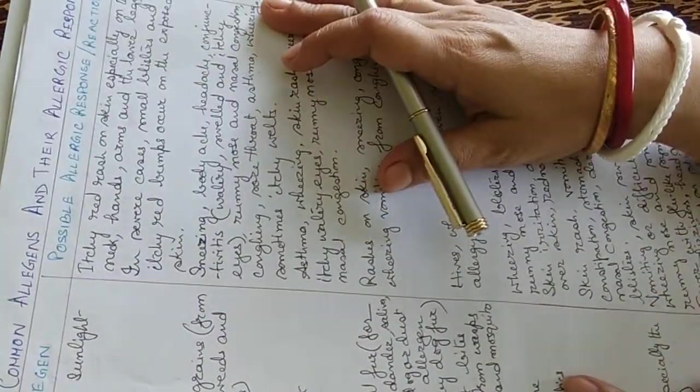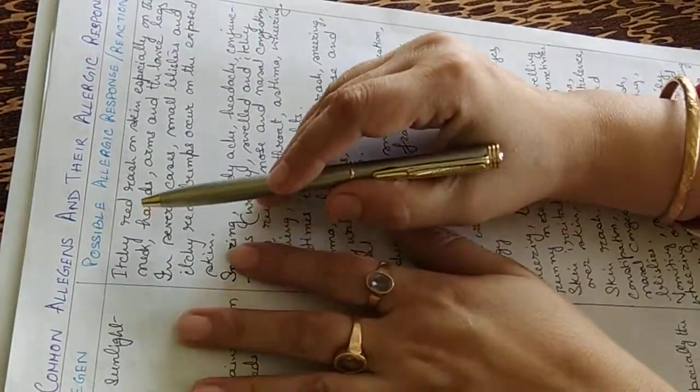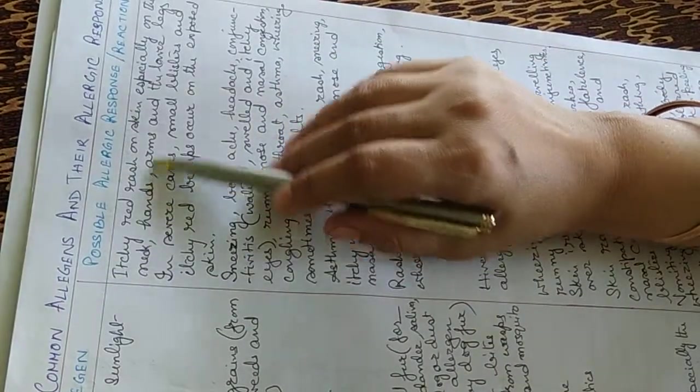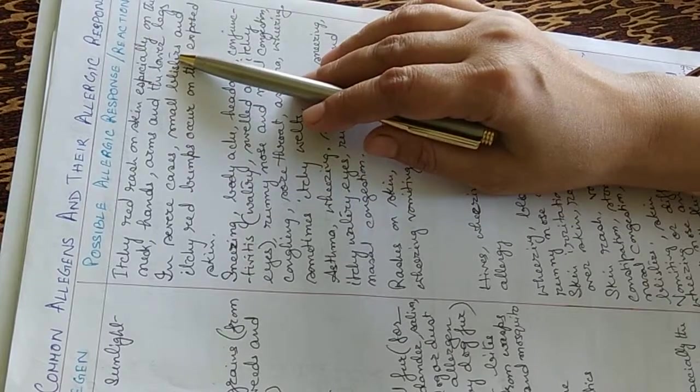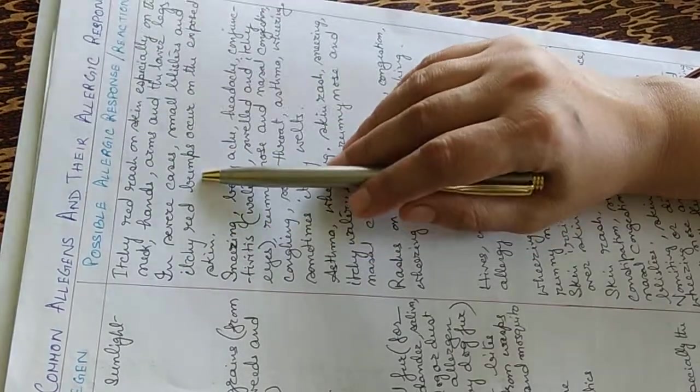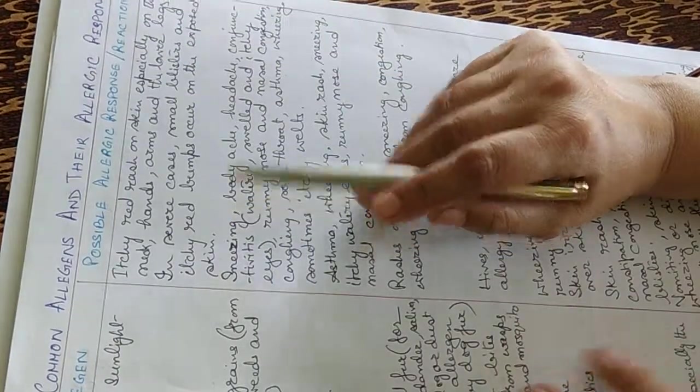Strong sunlight causes itchy red rash on the skin, especially on the neck, hands, arms and lower legs. In severe cases, small blisters and itchy red bumps occur on the exposed skin.